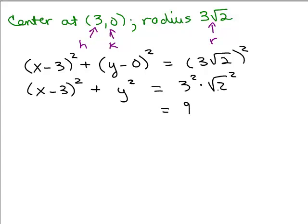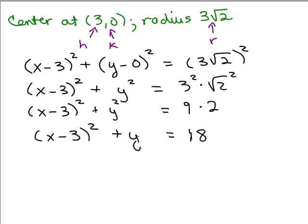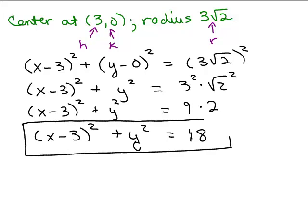So, 3 squared is 9 and square roots of 2 squared is just 2. So, this is going to be 18 once you simplify it. So, you could just copy the left-hand side and this is our standard form for that circle.